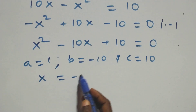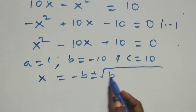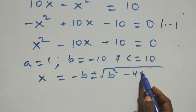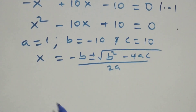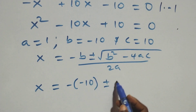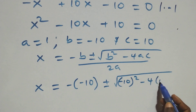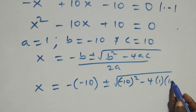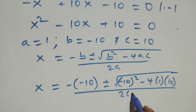We apply the quadratic formula: x equals minus b plus or minus square root of b squared minus 4ac, all over 2a. Substituting, x equals 10 plus or minus square root of (minus 10) squared minus 4 times 1 times 10, all over 2 times 1.